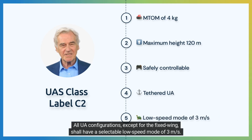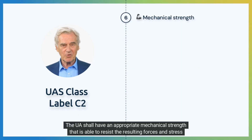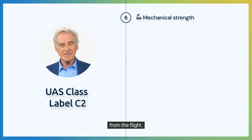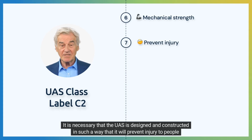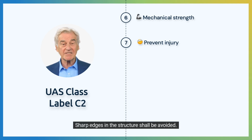All UA configurations, except for the fixed wing, shall have a selectable low-speed mode of 3 meters per second. The UA shall have an appropriate mechanical strength that is able to resist the resulting forces and stress from the flight. It is necessary that the UAS is designed and constructed in such a way that it will prevent injury to people during operation. Sharp edges in the structure shall be avoided.